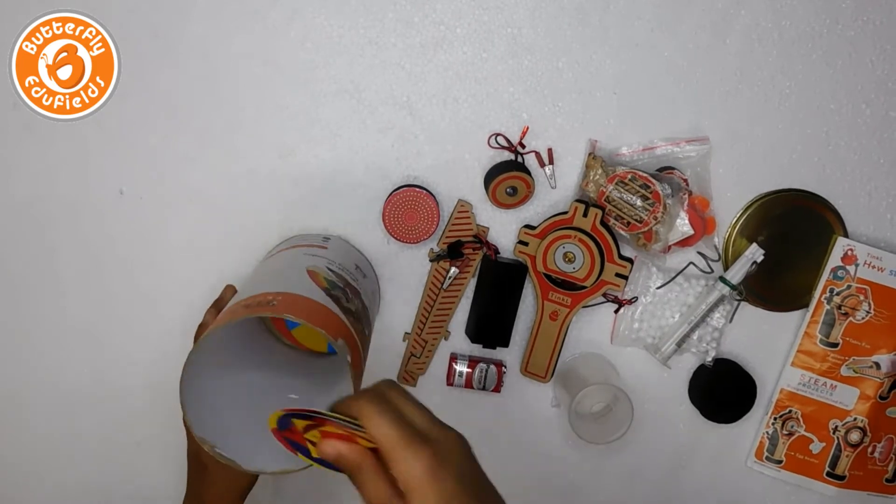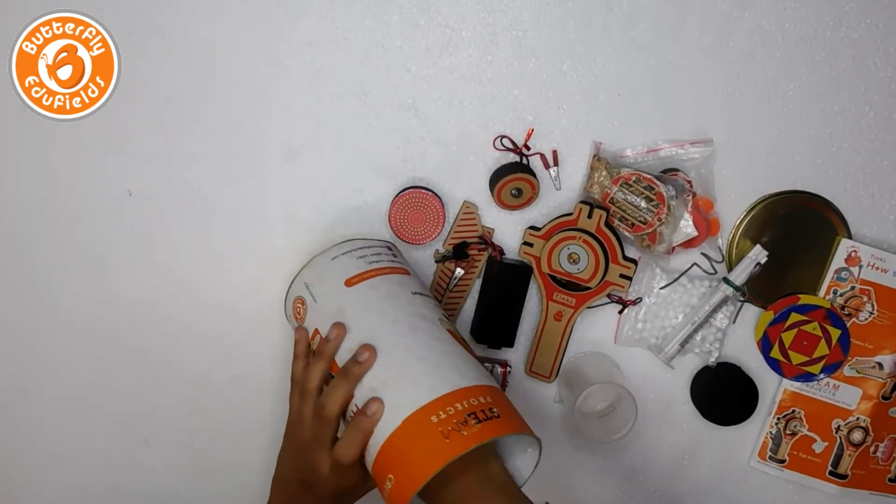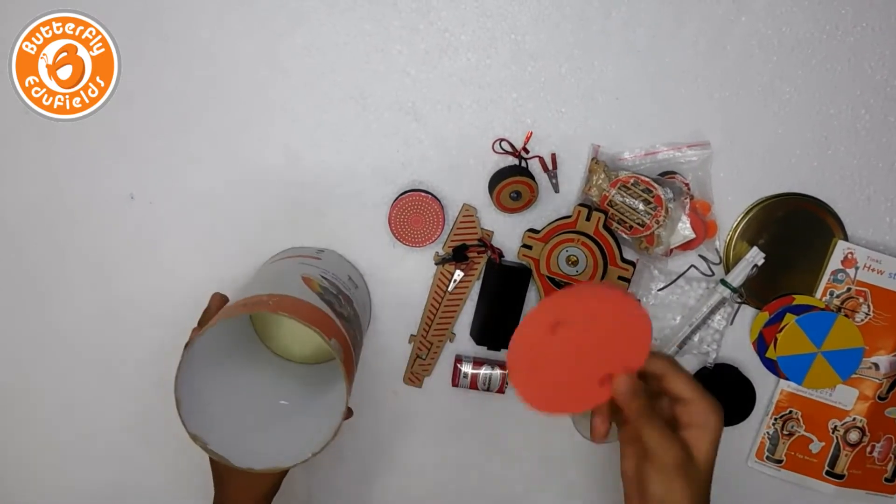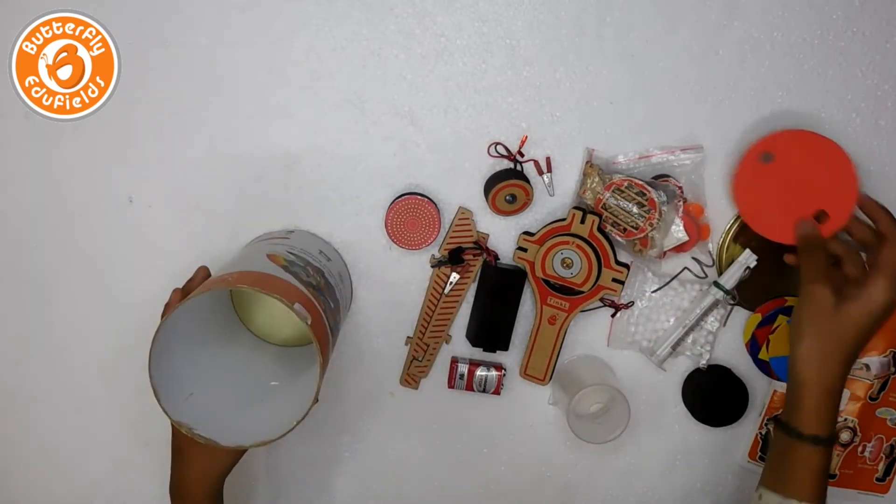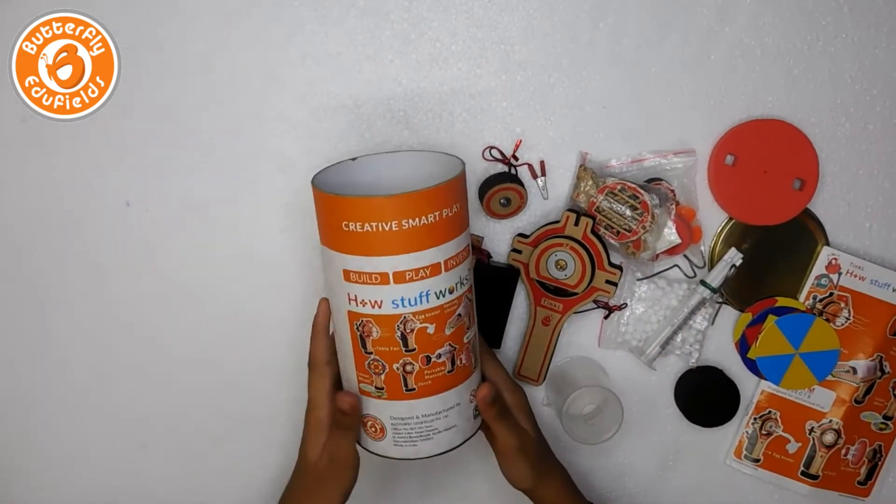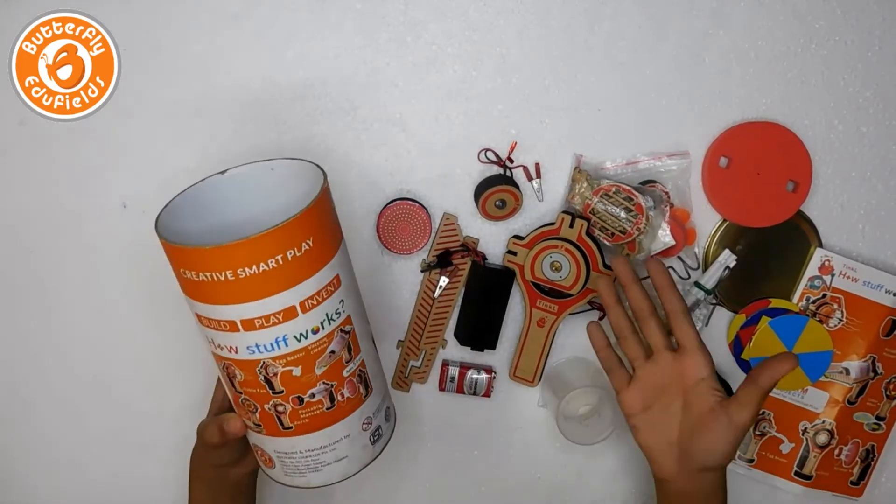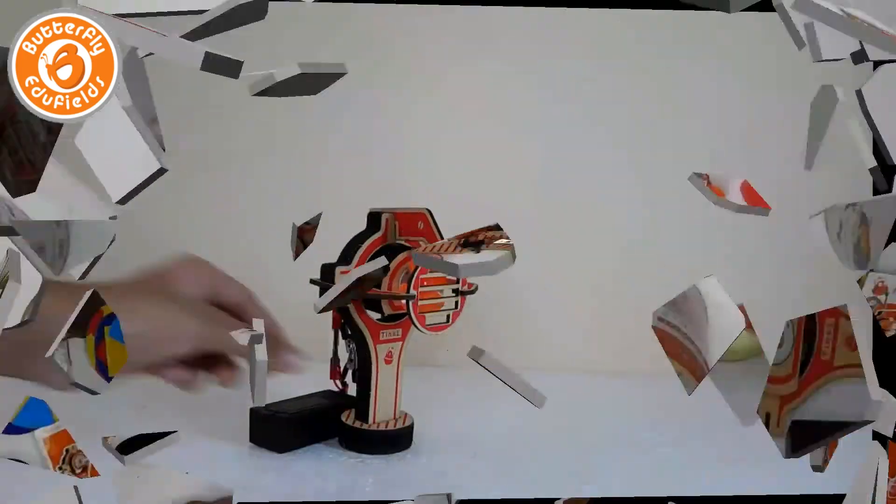There are a few pattern wheels and a big styrofoam piece. These are the components given inside this cylindrical box. You can make seven plus projects with this, and I made a few of them. So let's see how they are.